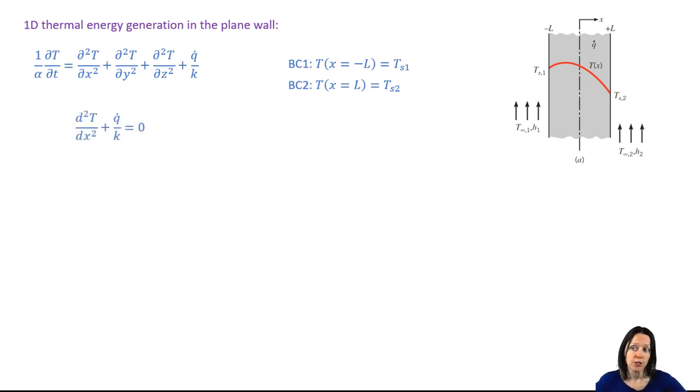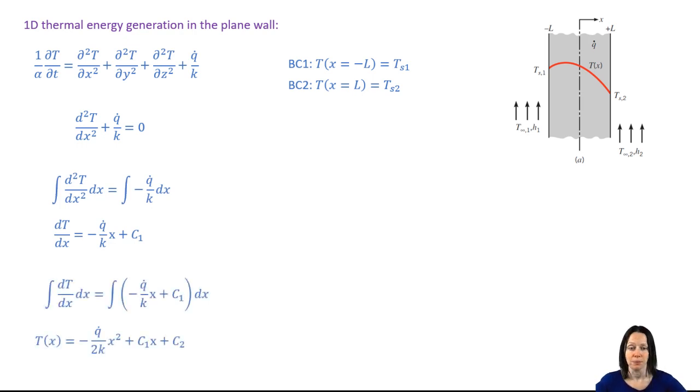So if we assume that conduction is steady state and one-dimensional, our differential equation simplifies. And then it's time to multiply each side by dx and integrate. C1 is our constant of integration. We multiply each side by dx and integrate again. And finally, we obtain the general solution for our differential equation.